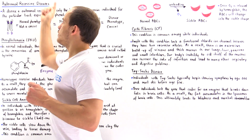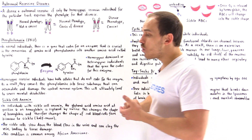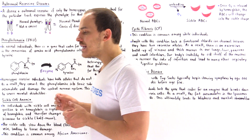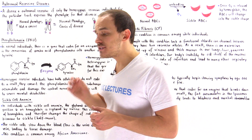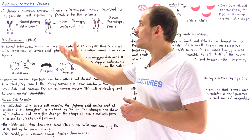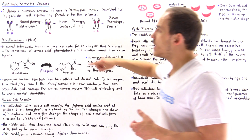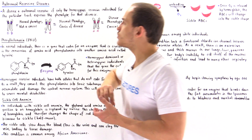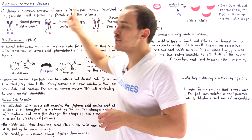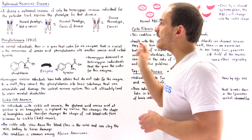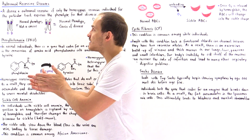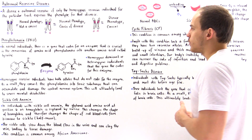A disease is said to be recessive if only the homozygous recessive individual — the homozygous recessive genotype — actually expresses that particular phenotype for that disease. So a disease is autosomal recessive if only the homozygous recessive individual for that particular trait expresses that phenotype, and the genetic abnormality exists on the autosome and not on the sex chromosome.